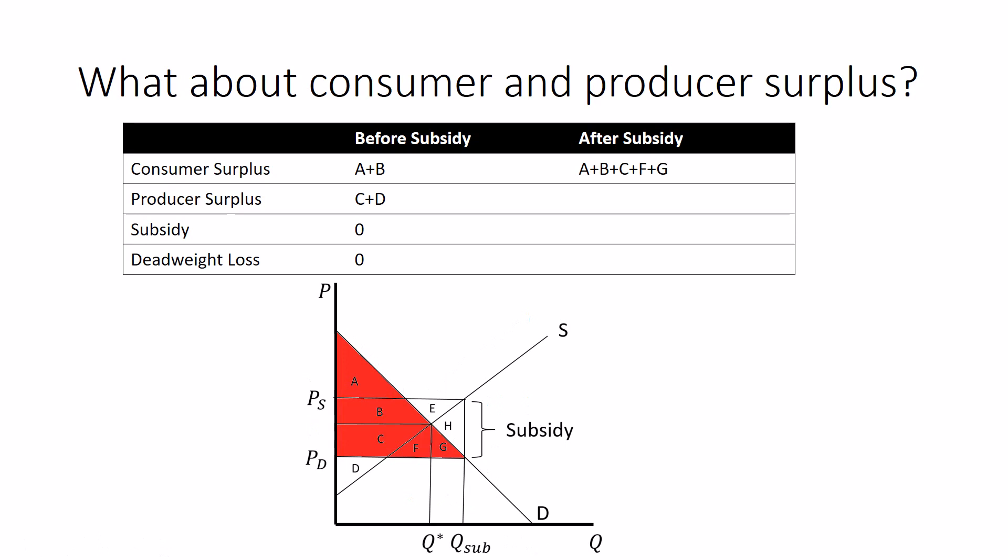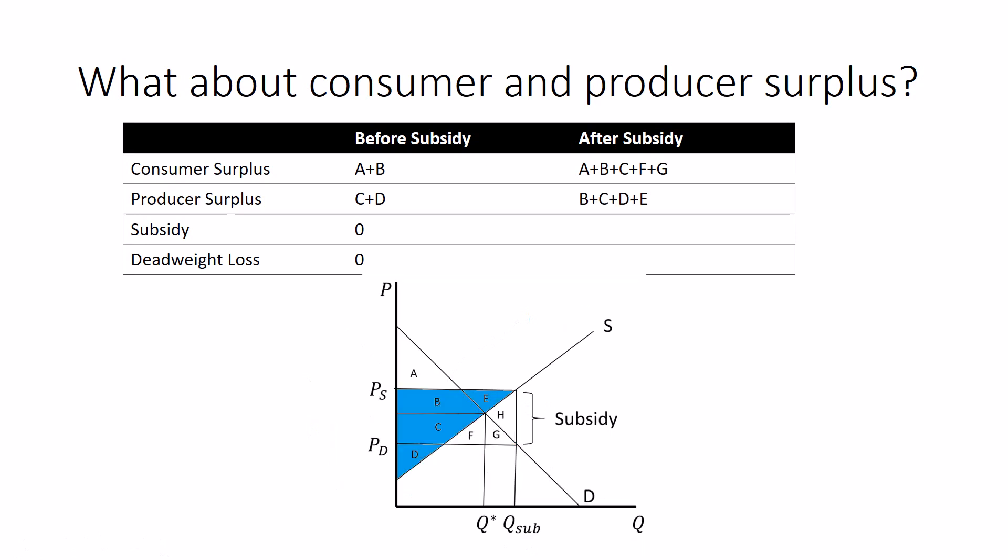What about producers? They receive a higher price and sell a higher quantity. So, producers surplus is B, C, D, and E. So, they gained B and E. You'll notice there's some double counting here. There's B's in both and there's C's in both. It will be accounted for because we're also paying money out.